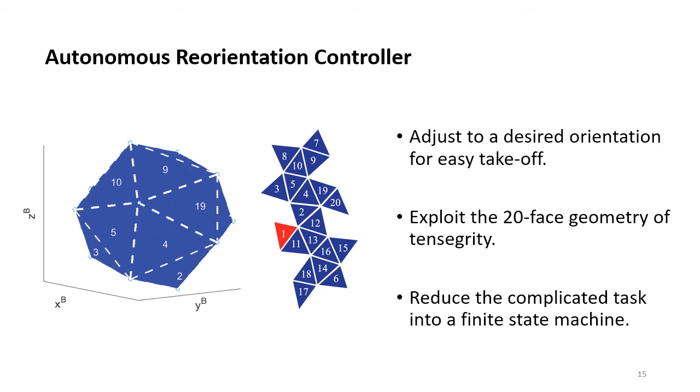For example, the vehicle lands with face 14 on the ground, and wishes to rotate to an orientation that face 1 is the contact face. Instead of directly rotating from 14 to 1, it will rotate from 14 to 18, 18 to 11, and finally from 11 to 1.